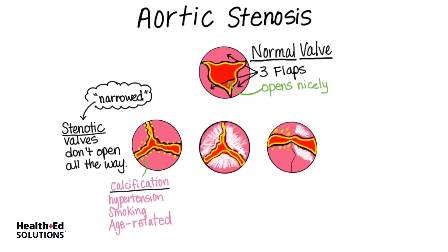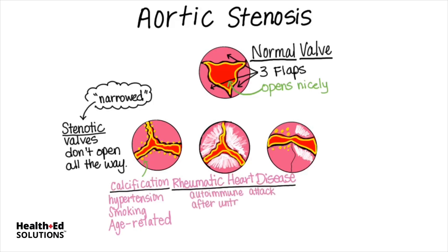In developing countries, aortic stenosis is most often the result of rheumatic heart disease, which is generally believed to be caused by an autoimmune attack of the heart valves after an untreated Streptococcus pyogenes infection. The attack of these valves by the person's own immune system causes the valve to develop fibrotic scarring, which stiffens the valve.